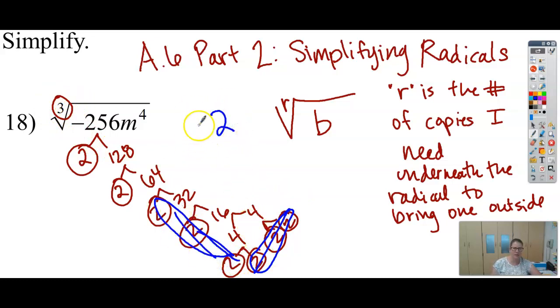So 3 2's there means I can bring 1 out front. 3 2's here means I can bring 1 out front. And the 2 left over means those 2 would have to stay inside, right? So that means outside I've got a 4, inside I've got a 4.